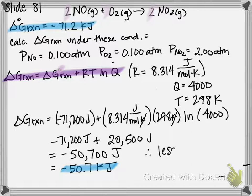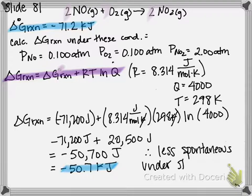So therefore, it's less spontaneous because it's more positive. Remember, the more positive a delta G is, the less spontaneous it is. The more negative, the more spontaneous. So under non-standard conditions, delta G of our reaction is less spontaneous under standard conditions. And there you have it. Thank you.